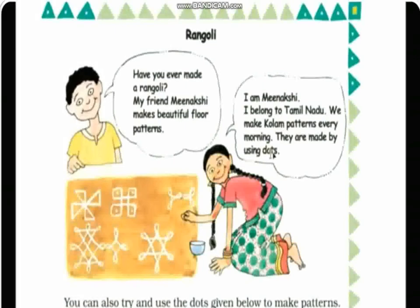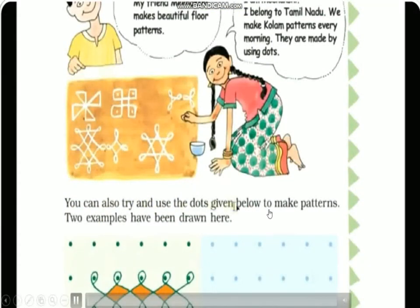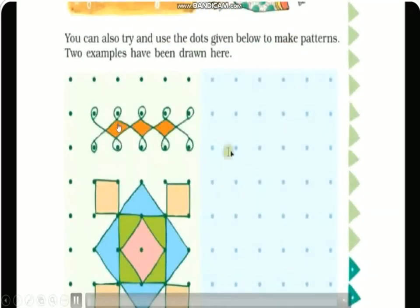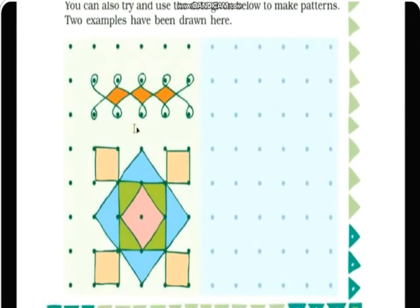Here you can see the two examples. In this one, curved lines are used, and the other pattern is made using straight lines. You can see all the lines here are straight — this one, this one, and this one are all straight lines. And this rangoli is made using curved lines — you can see the curves here.